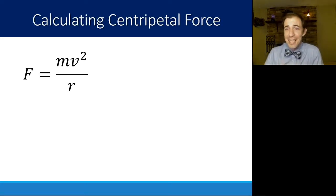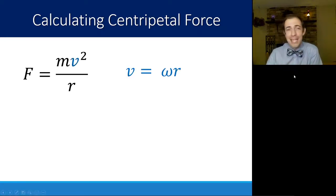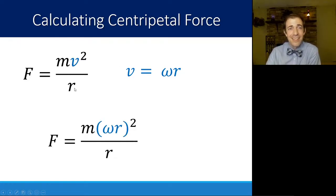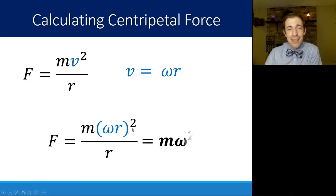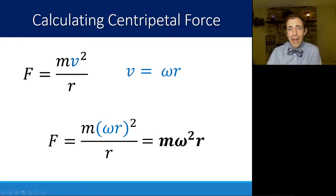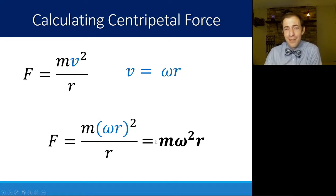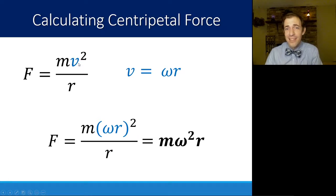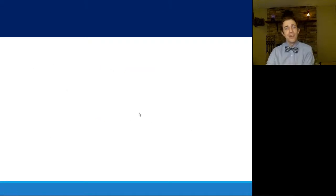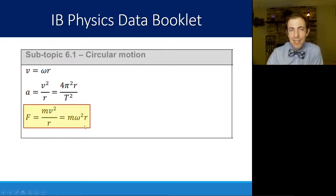There's another centripetal force equation in your data booklet. Since v = ωr, substituting into F = mv²/r and distributing the square gives F = mω²r, where r²/r simplifies to a single radius. So if you have angular velocity instead of linear velocity, that's fine — both equations are provided in your data booklet.